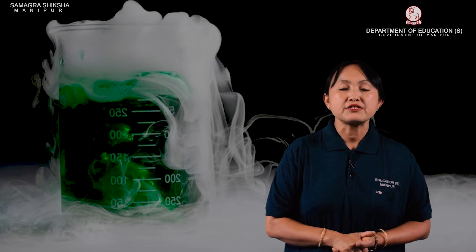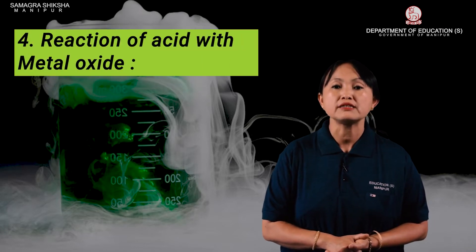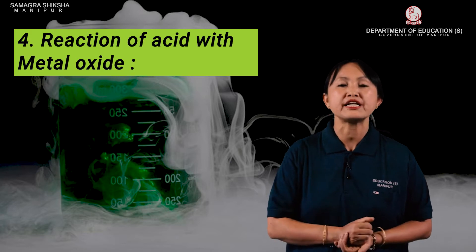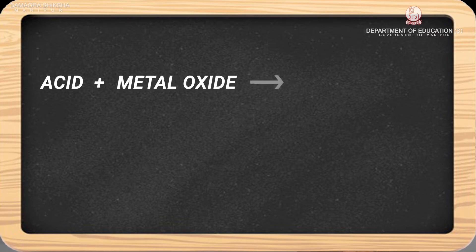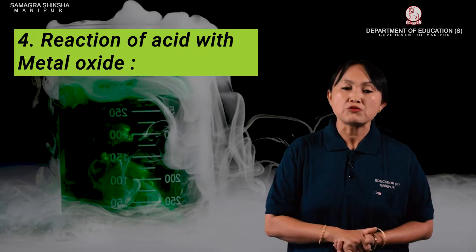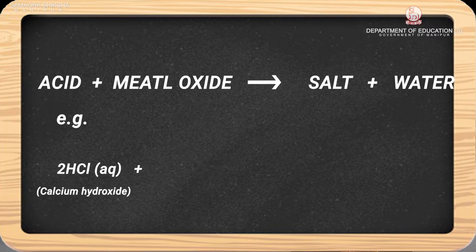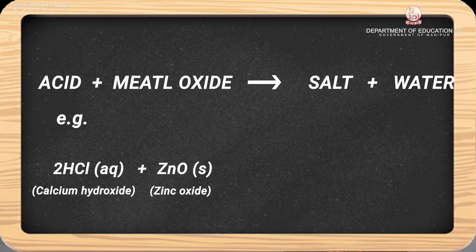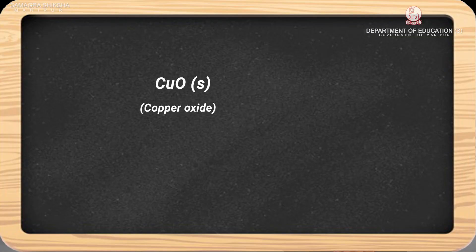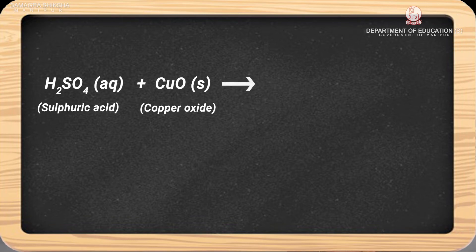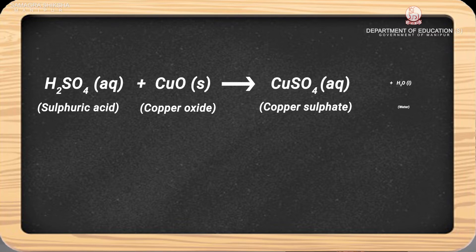The next chemical property of acid and base is the reaction of acids with metal oxides. When an acid reacts with a metal oxide, acids react with metal oxide forming salt along with water. For example, hydrochloric acid reacts with zinc oxide to form the salt zinc chloride along with water. Another example: copper oxide reacts with sulfuric acid to form the salt copper sulfate along with water.